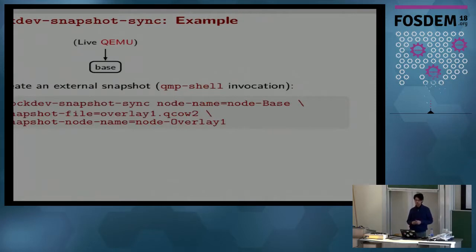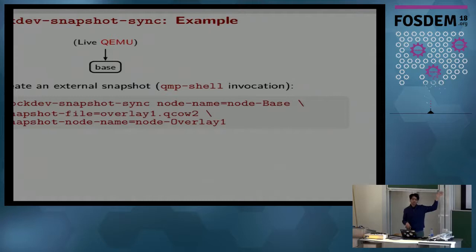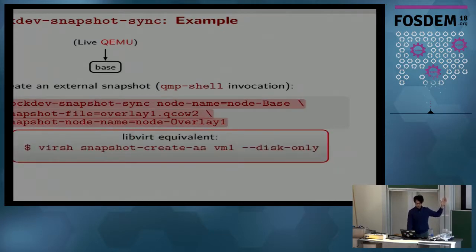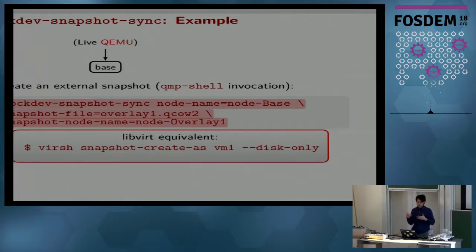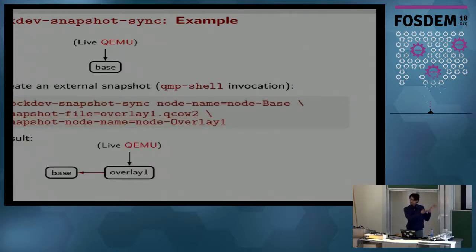As a quick example: when you start with a base image where a live QEMU is writing, you issue the block-dev-snapshot-sync command with a bunch of parameters. It will create the overlay. There's also a LibVirt equivalent — you don't have to use QMP directly, since LibVirt provides nice virtual machine lifecycle management. The result is an overlay pointing to the base, where previously the live QEMU was pointing at the base image, and now it's pointing to the just-created QCOW2 overlay.